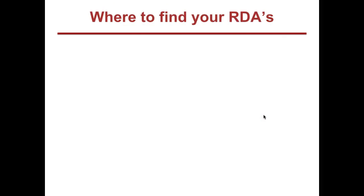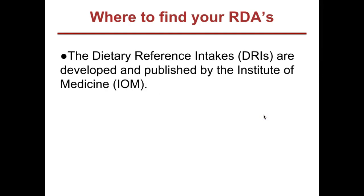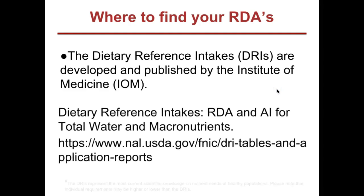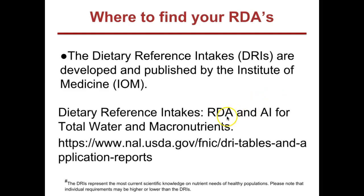Where can you find your recommended dietary allowances? The daily dietary reference intakes are developed and published by the Institute of Medicine in conjunction with the U.S. Department of Agriculture. Dietary reference intakes — which include your recommended dietary allowances and adequate intakes for water, macronutrients, vitamins, and minerals — can be found at the USDA DRI tables and application reports. It's important to know that RDAs and AIs represent the most current scientific knowledge of nutrient needs for healthy populations. Individuals who are sick may have requirements that are higher or lower, and you should always consult your medical professional.